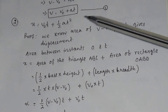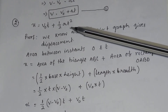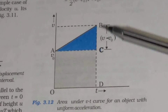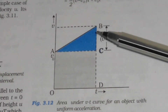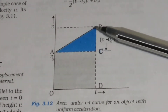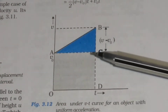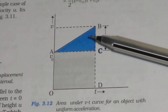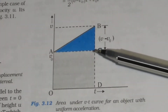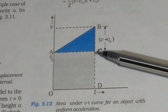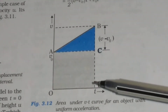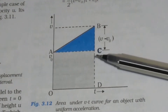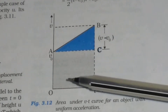Now let us deduce the second equation of motion: x equals v0·t plus half a·t² using the graphical method. We know the area of the vt graph gives displacement. So if we calculate the area under this vt graph, it will give the expression for displacement. The area under line FB equals the area of this triangle plus the area of this rectangle. The area of this triangle is equal to half times base times height, where the base length equals t and the height equals v minus v0. The area of the rectangle equals length times breadth, where length equals v0 and breadth equals t, so the area of the rectangle equals v0 times t.